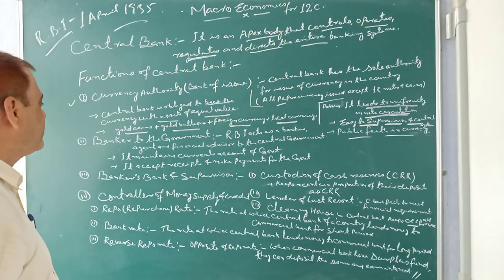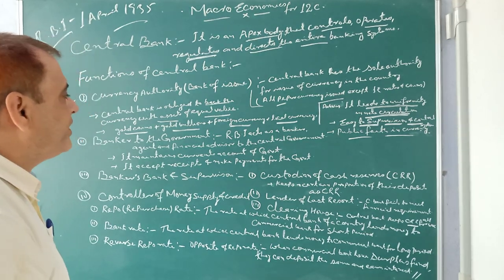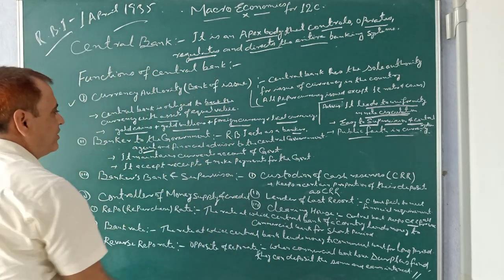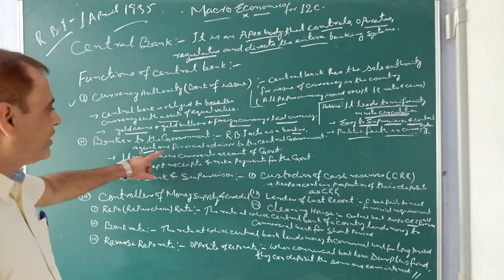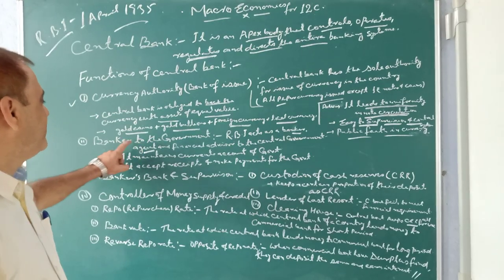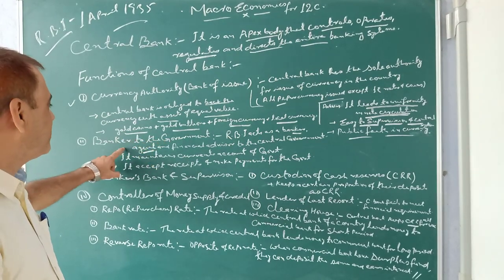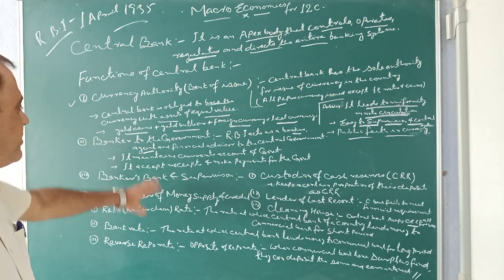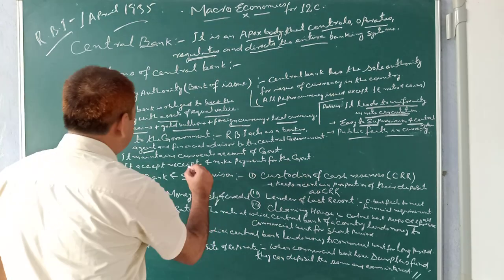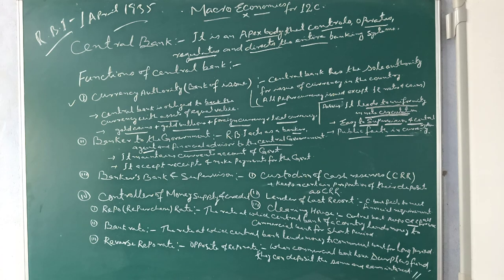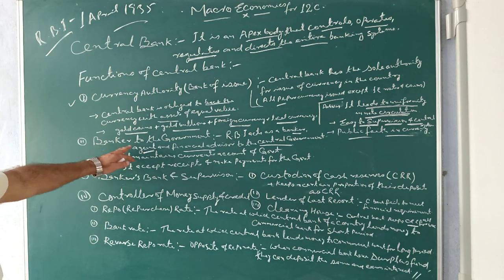The second function of the central bank is banker to the government. This means the RBI — the Reserve Bank of India — acts as a banker, agent, and financial advisor to the central government. It advises and provides banking services to the government. All current accounts of the government are maintained, and all payments and receipts are kept there. The central bank of any country is called the banker to the government.